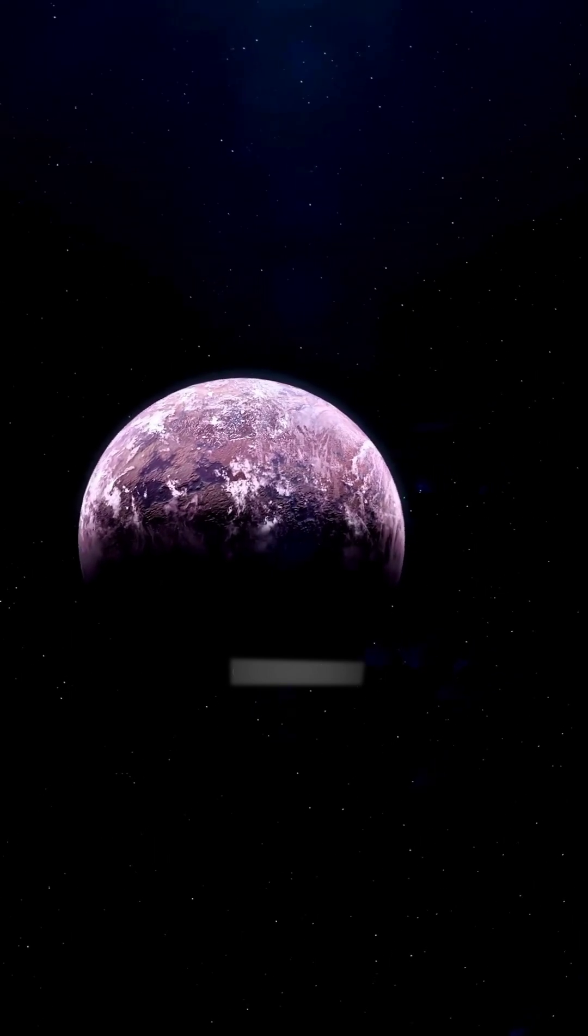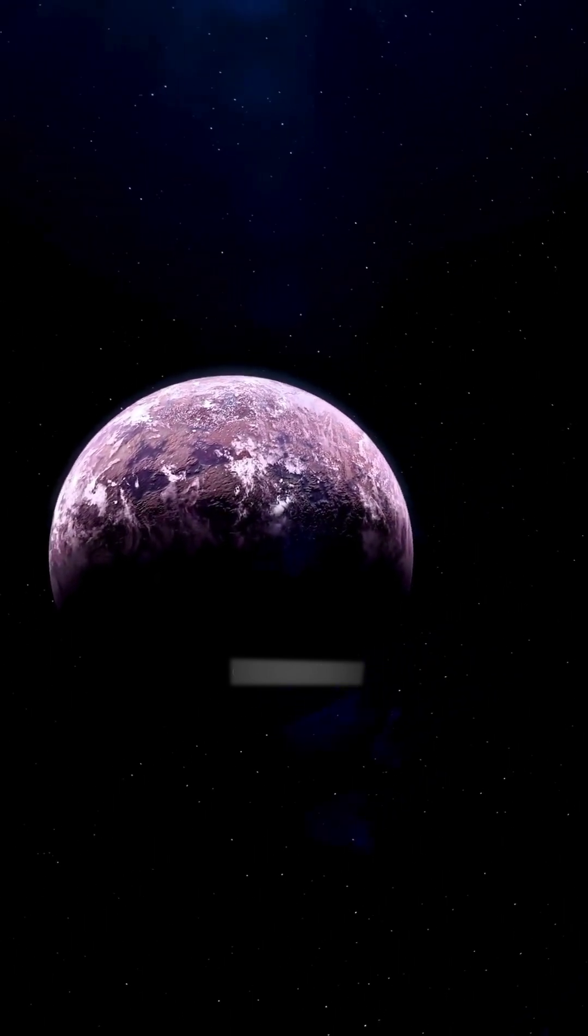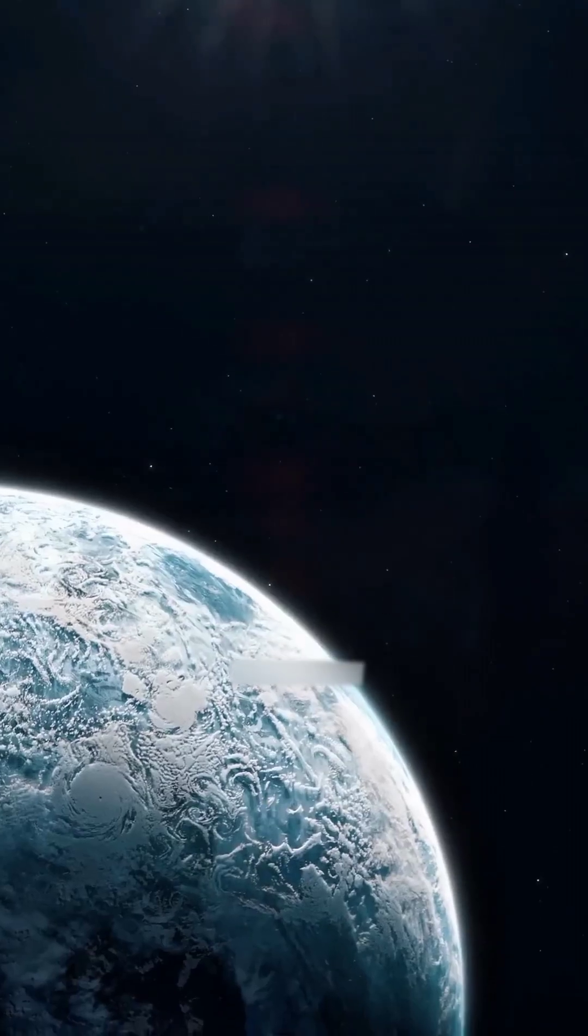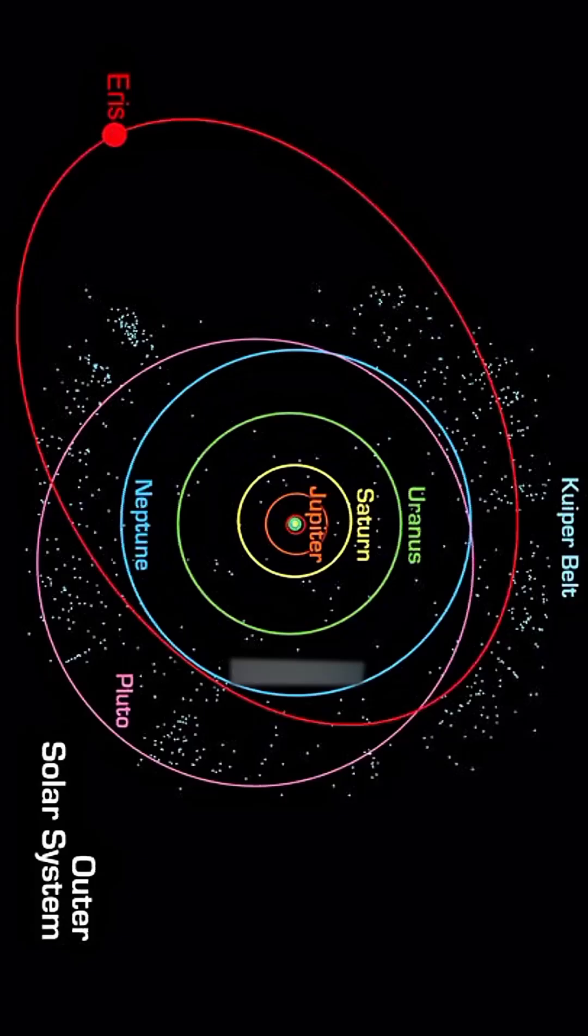Eris is extremely far from Earth and the Sun. Sometimes it drifts so far away that its atmosphere completely freezes. Its orbit is highly unusual. At times it comes closer to the Sun than Pluto, while at other times it moves twice as far away.